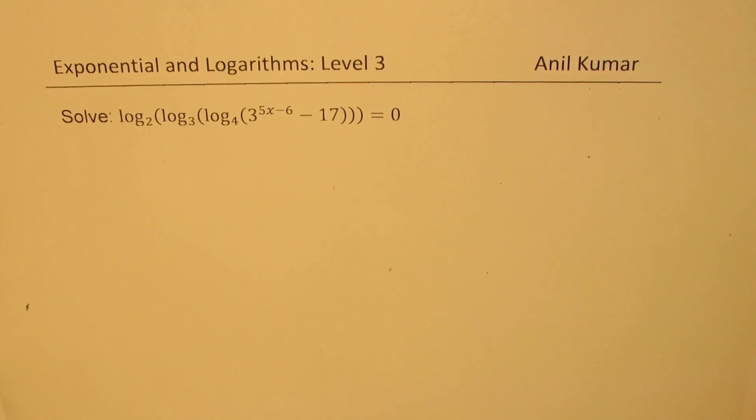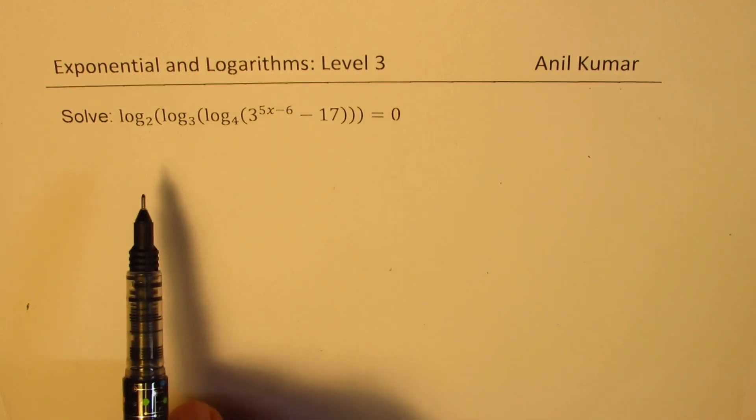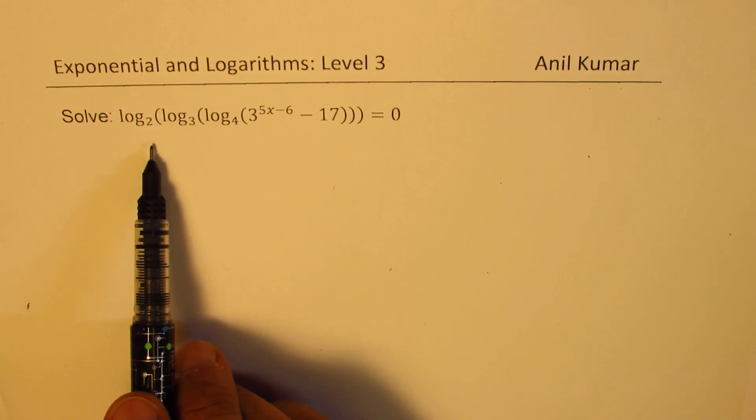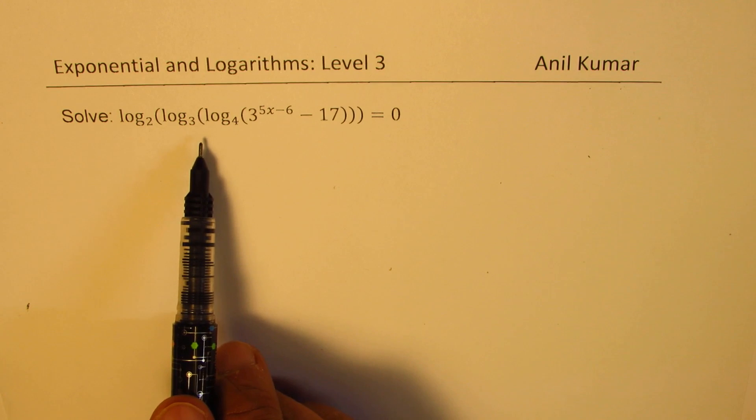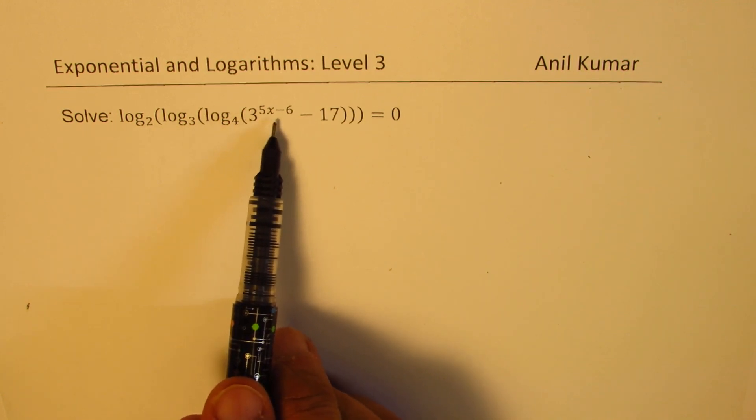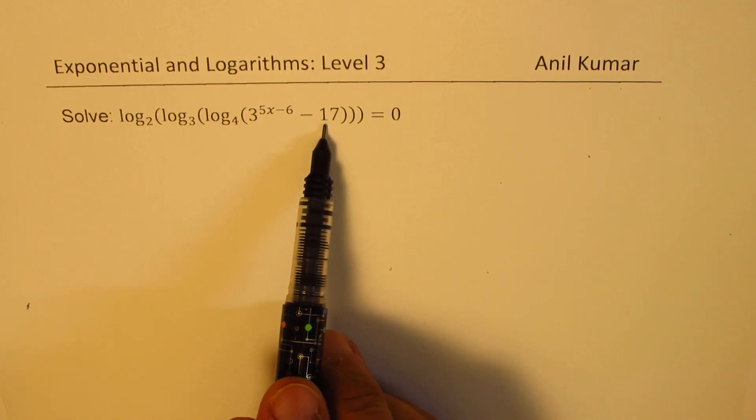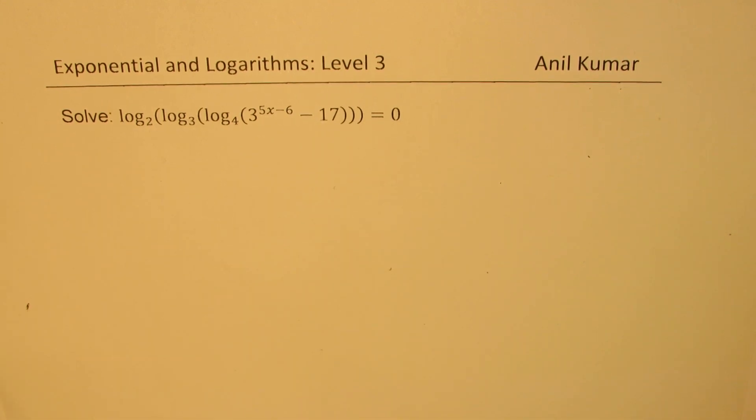I'm Anil Kumar, welcome to my series on exponential and logarithmic equations. Here we are working with some interesting questions. We need to solve this equation: log base 2 of log base 3 of log base 4 of 3 to the power of 5x minus 6, minus 17, equals 0.